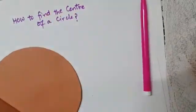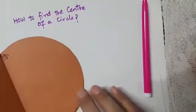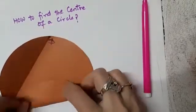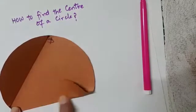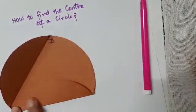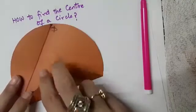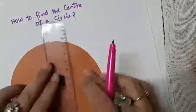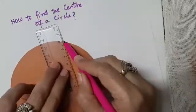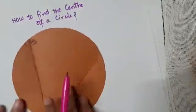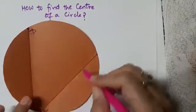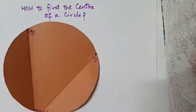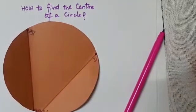I need to get another chord which is not parallel to AB — I'll explain the reason shortly. By folding again, I get another chord and let us name this chord CD. Points C and D are on the boundary of the circle.